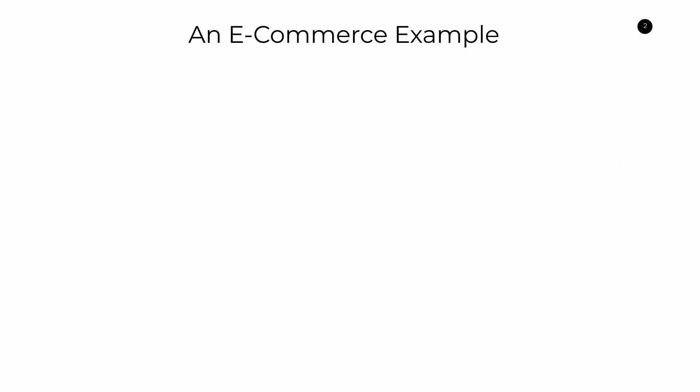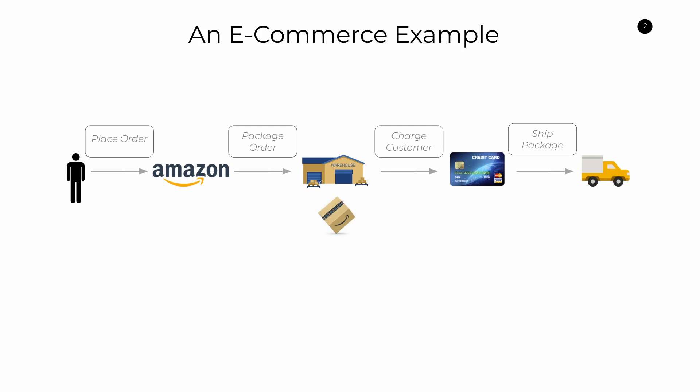I wanted to use an e-commerce example to explain the difference between these two application architectures. Let's assume that we have four core stages in this application workflow. The first step involves you, the user, placing the order with some kind of e-commerce retailer. From there, the online retailer needs to communicate with the warehouse to receive that order and maybe dispatch a warehouse worker to package that order up.